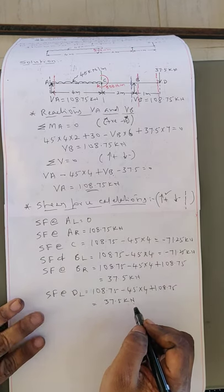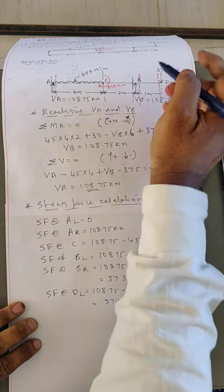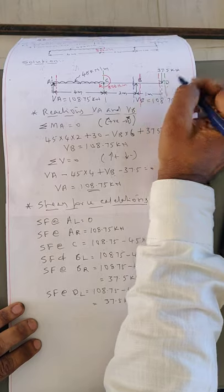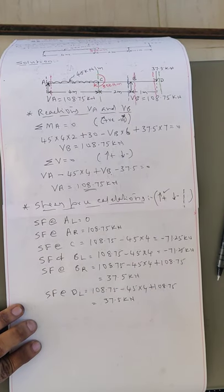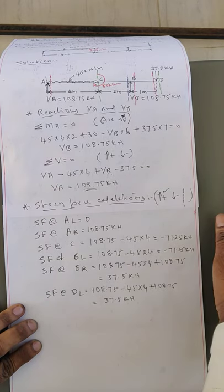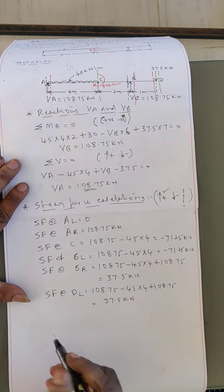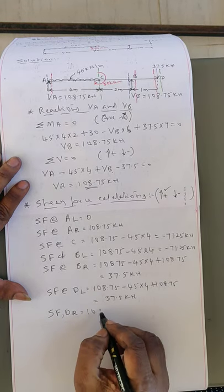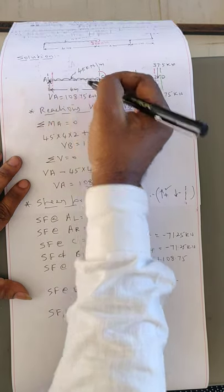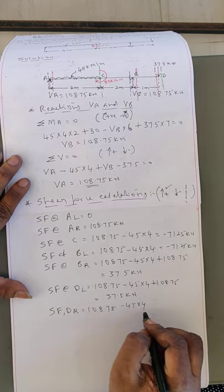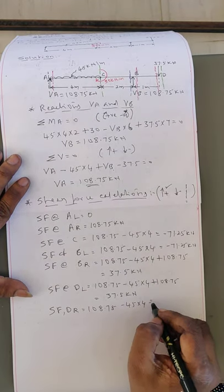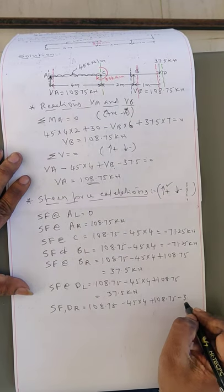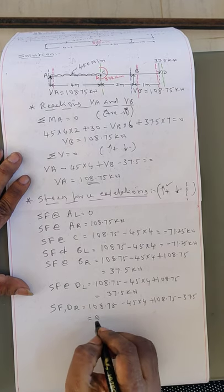Shear force at D right: section line is just right of D. Considering the left portion: 108.75 − (45 × 4) + 108.75 − 37.5 = 0. Shear force at D right = 0, confirming equilibrium.